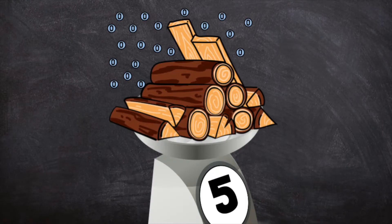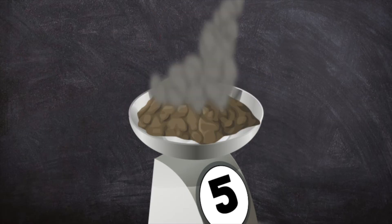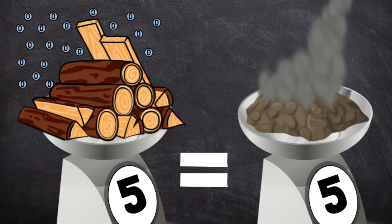Let's say the mass of the firewood and the oxygen before lighting a fire is five kilograms. After the wood has burned up and the fire goes out, the mass of the smoke, ash, water vapor, and carbon dioxide is still five kilograms. Matter is not gained or lost during a reaction — it simply changes as elements rearrange to form new substances.